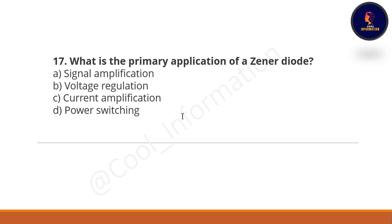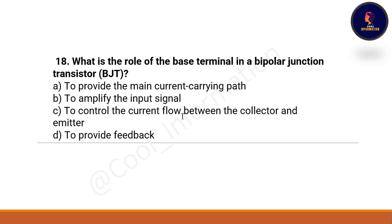Next question: What is the primary application of a Zener diode? Option A: signal amplification. Option B: voltage regulation. Option C: current amplification. Option D: power switching. The correct option is voltage regulation.